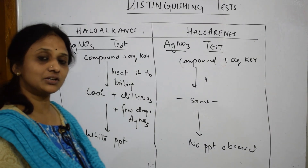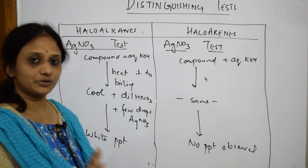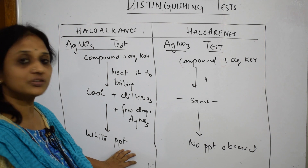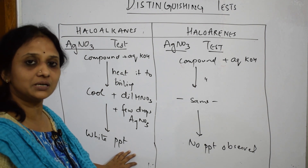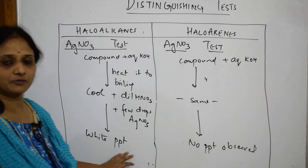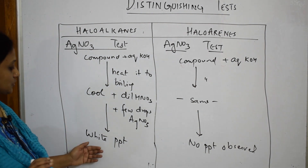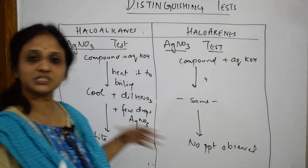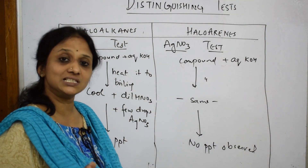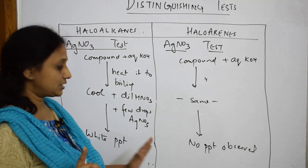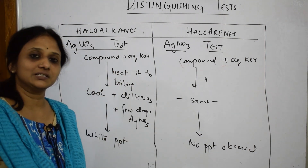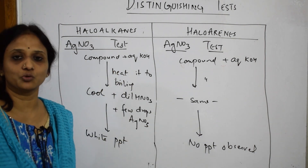So basically, as I go into the reactions I'll try to write the formulas also. If I take a specific compound like chlorobenzene or bromobenzene, I'll write the product formation. White precipitate is observed with haloalkanes and no precipitate is observed with haloarenes. This is the distinguishing test between haloalkanes and haloarenes using the silver nitrate test.